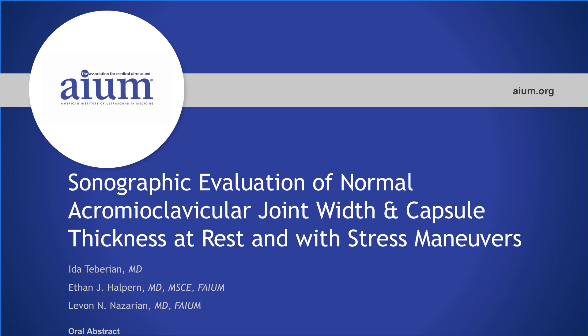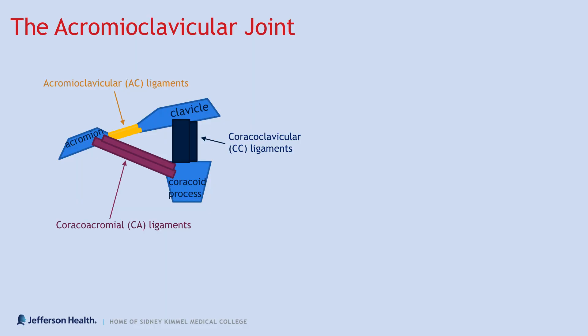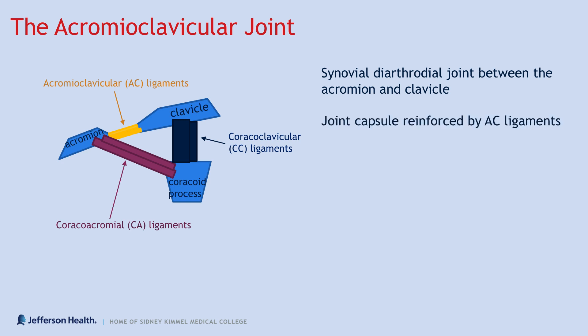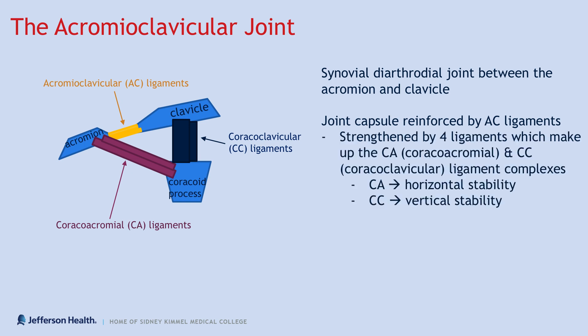We're going to begin with a simple overview of the joint anatomy. The AC joint is a synovial diarthritial joint between the acromion and the clavicle. There is a joint capsule which is reinforced by acromioclavicular or AC ligaments, as seen in yellow in the image to the left. This is further strengthened by four ligaments which make up the coracoacromial or CA and coracoclavicular or CC ligament complexes. The CA ligaments offer horizontal stability and the CC ligaments vertical stability.